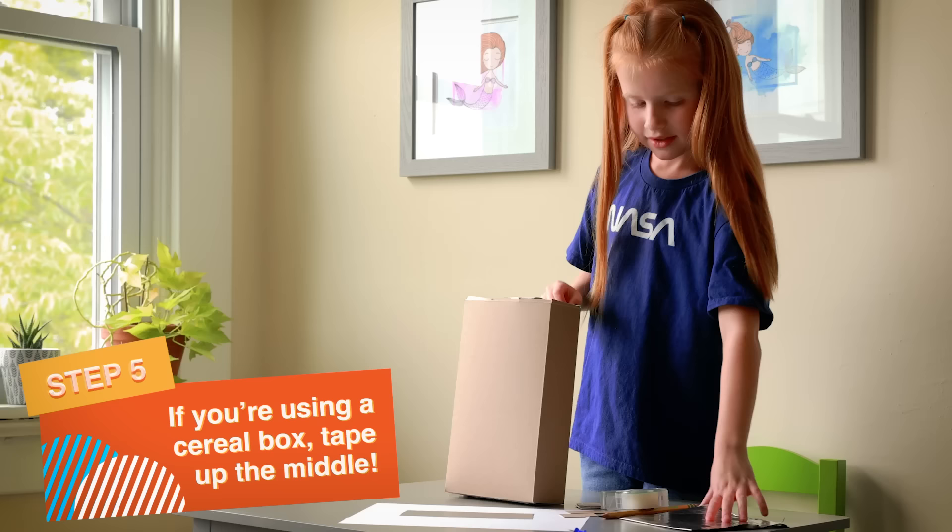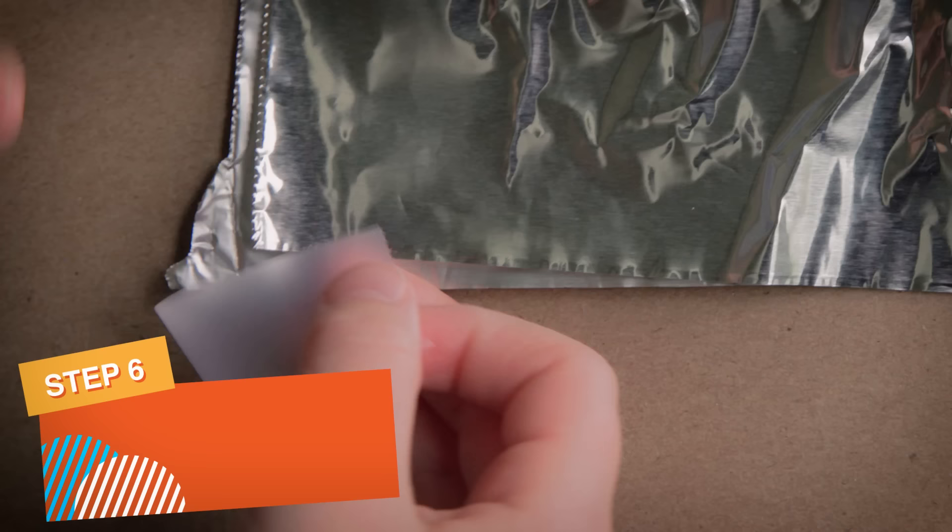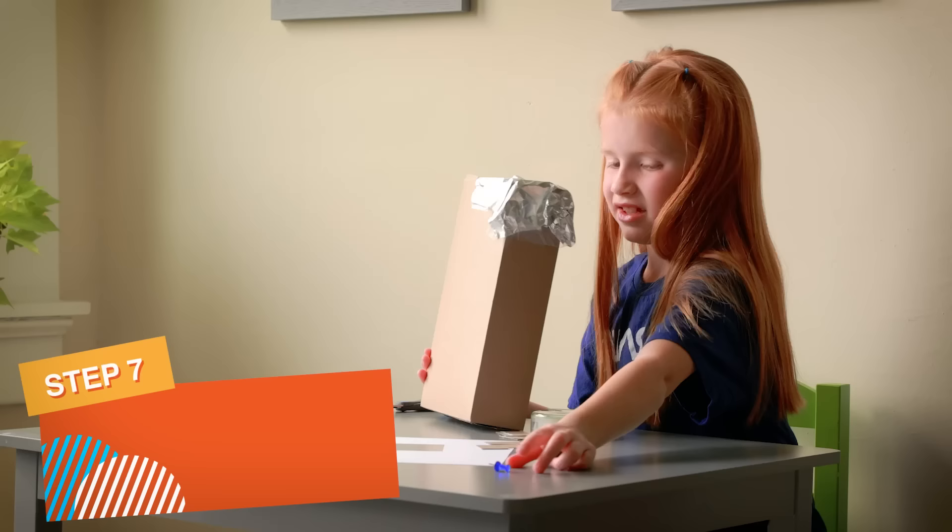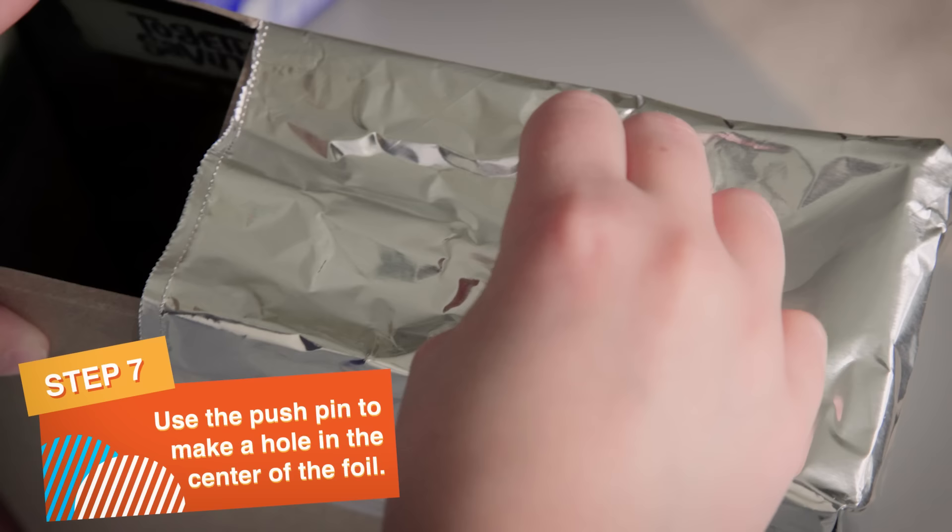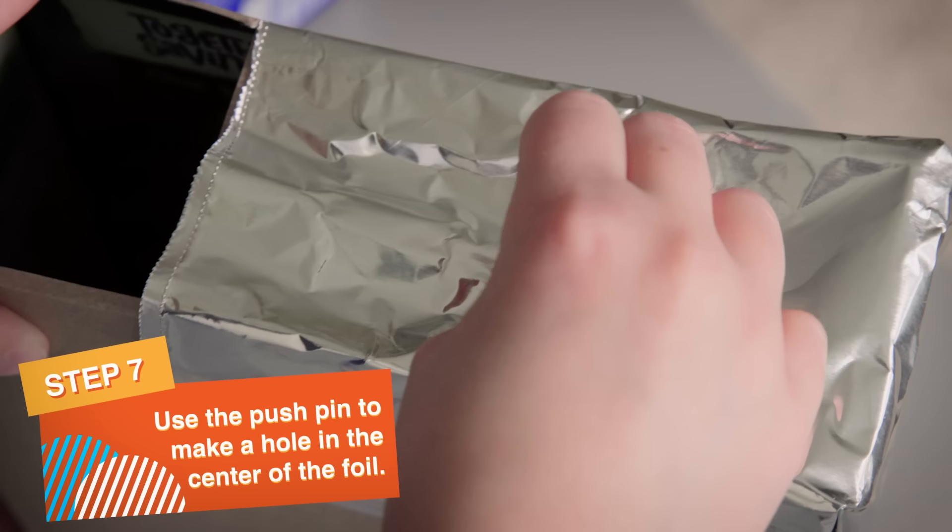Now cover one of the square holes completely with aluminum foil. Use tape to help the foil stay in place. Finally, take the pushpin and punch a very small hole in the center of the aluminum foil. Ta-da!